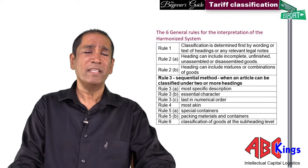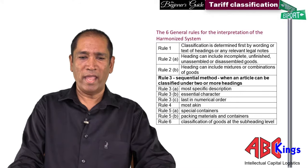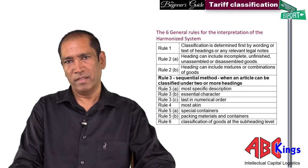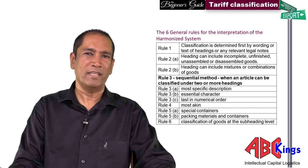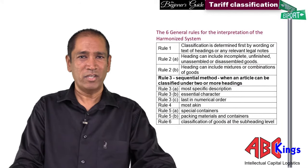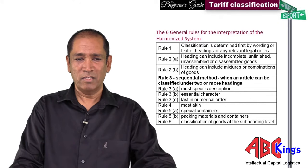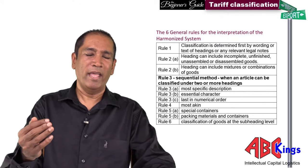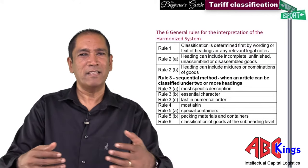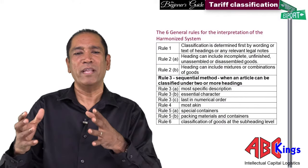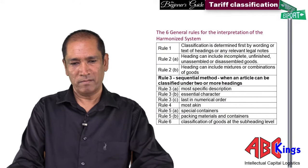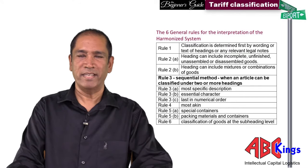Rule 2B says you might have a product with more than one composition — for example, a shirt that is 65% nylon and 25% cotton. A tariff heading that specifically mentions a composition doesn't mean the goods must be solely of that composition. It can also include mixtures and combinations of other goods and raw materials.